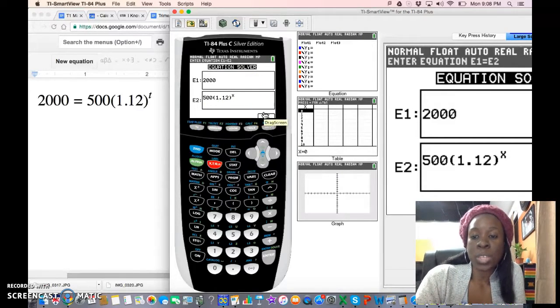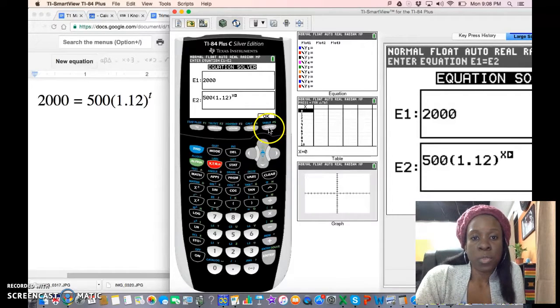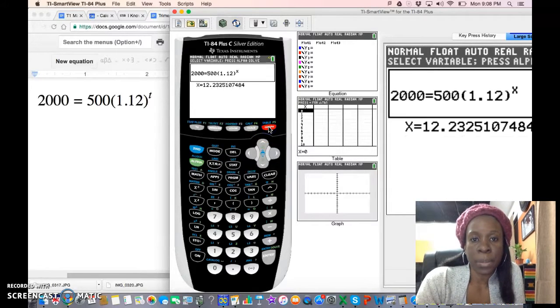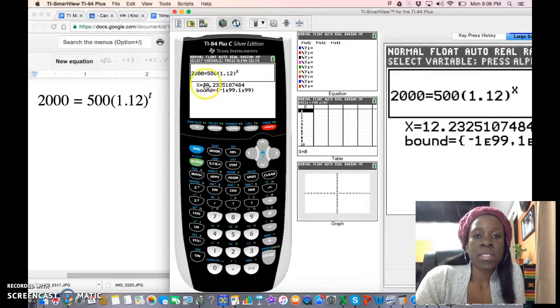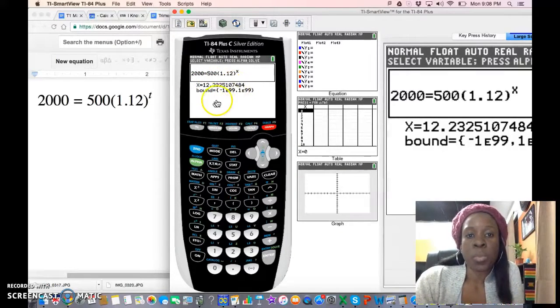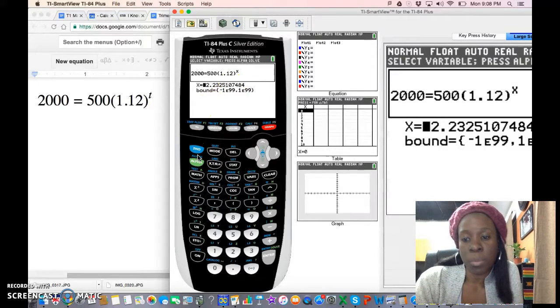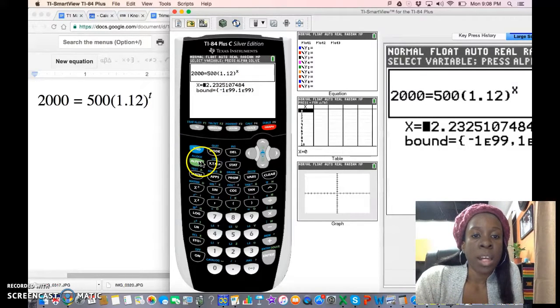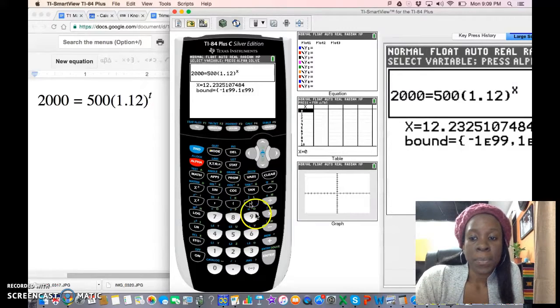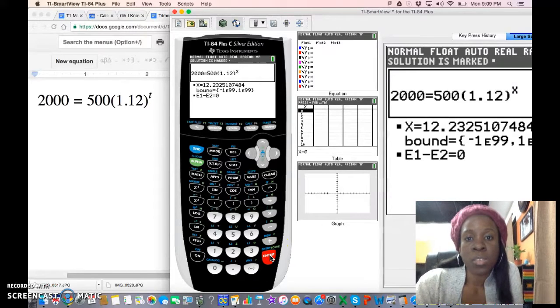When I'm ready to solve it, I have two things that I have to do. I have to first say OK, which is right here underneath the graph button. It's not done yet even though I did it earlier, but usually it won't be done yet. You have to actually tell the calculator to solve the problem, so you then go Alpha and Enter because it says Solve right here, and you have solved the problem.